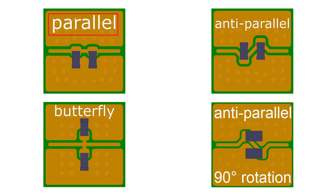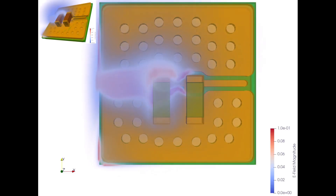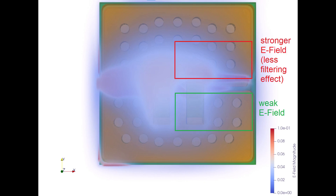The first setup is to simply place two capacitors in parallel. The problem with this setup is that the fields on a trace don't just extend in one direction but around the whole trace. So this capacitor arrangement only filters on one side, but the filtering effect on the opposite side is less.